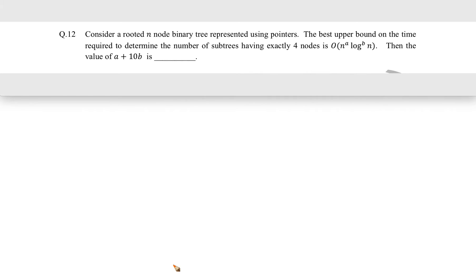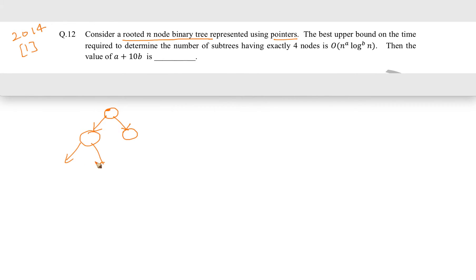This question came in GATE 2014 for one mark. The question is: consider a rooted n-node binary tree represented using pointers, where each node has pointers to the left and right child. They are asking for the best upper bound on the time required to determine the number of subtrees having exactly four nodes.